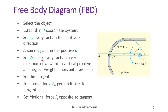As described in part 1, weight is always acting downward. Other forces like the normal force will be normal to the tangent, while the friction force acts along the tangent but opposes the motion. Let's see how we can put all those forces together.